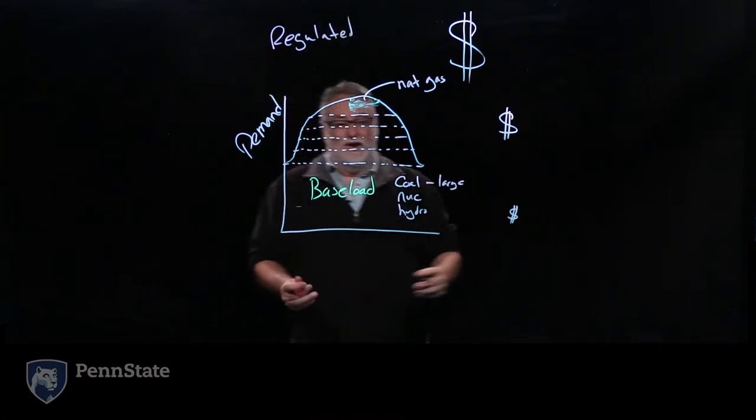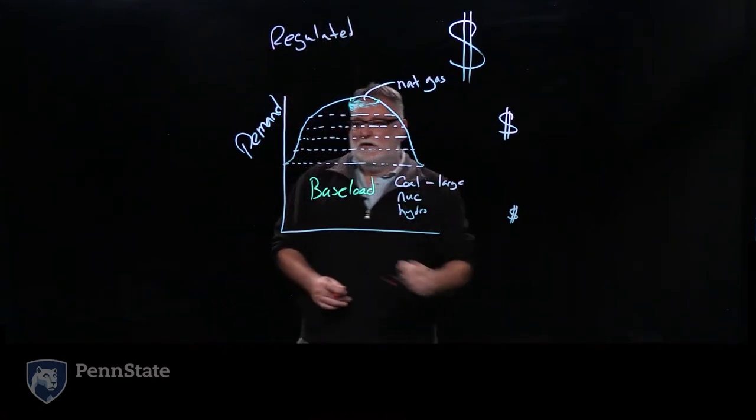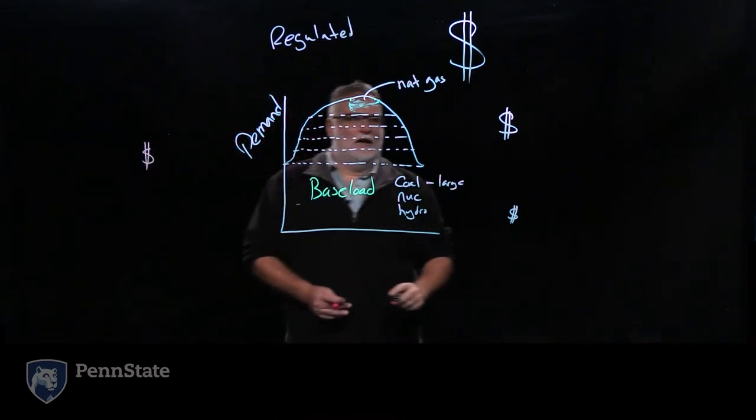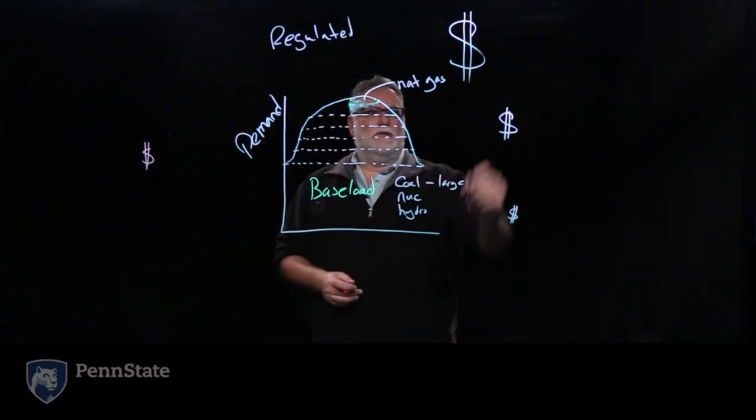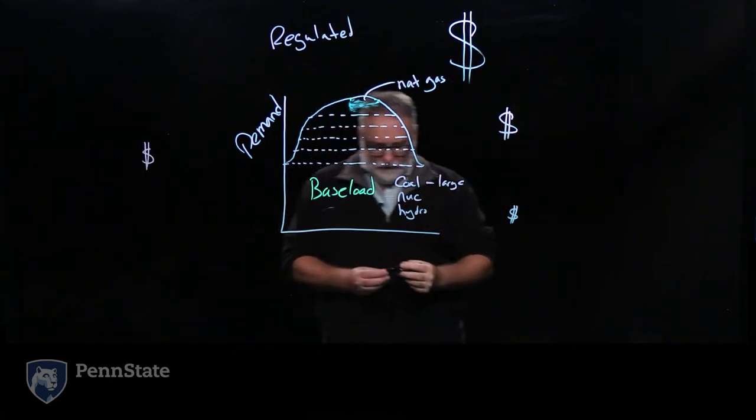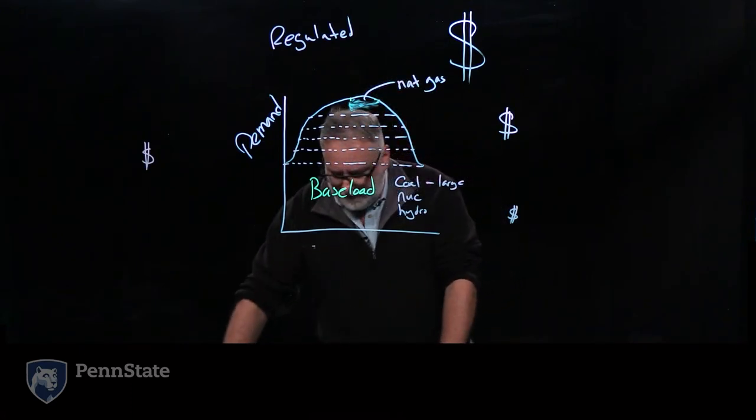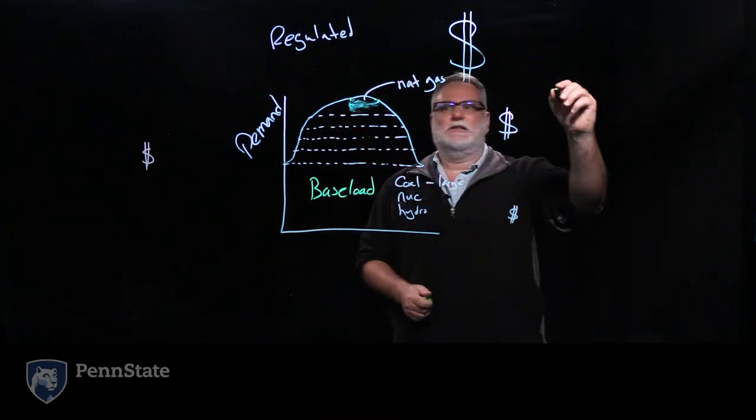And so even though when you pay for your electricity, you had a standard cost per kilowatt hour, you can see that we have a variable cost going through the day. So it was decided that we might be able to do better by going to a deregulated system.